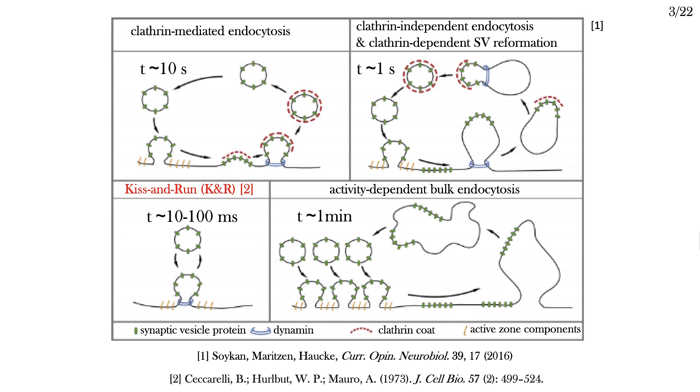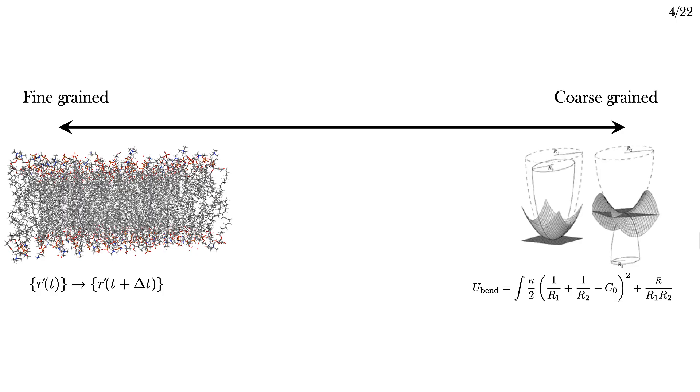I'll let people with more expertise in neurobiochemistry argue about that. I'm interested in the way that the membrane rearranges during the kiss-and-run mechanism. I'm taking a theoretical approach, and there's a variety of ways that one can simulate membranes at various levels of coarse graining.